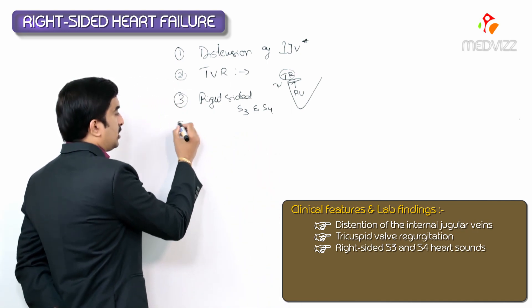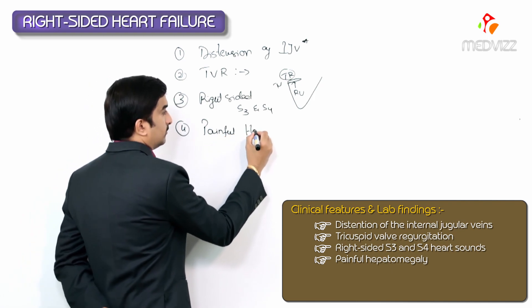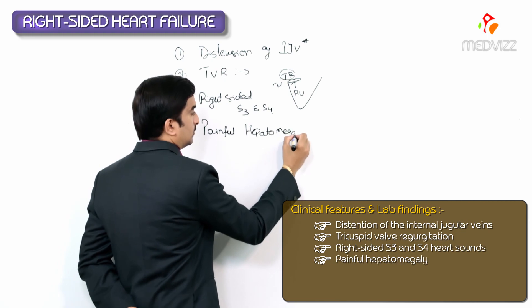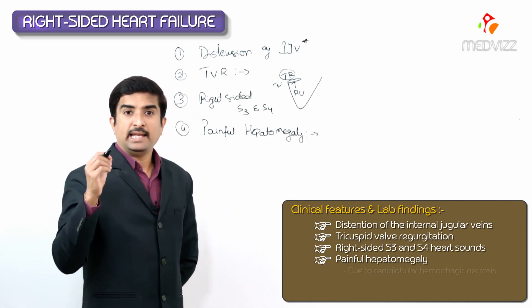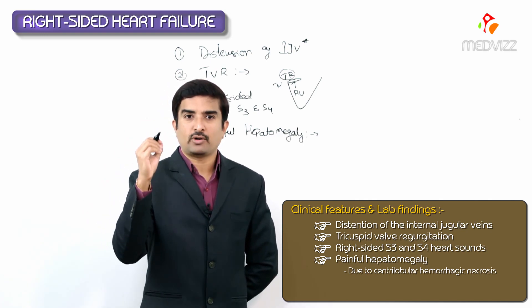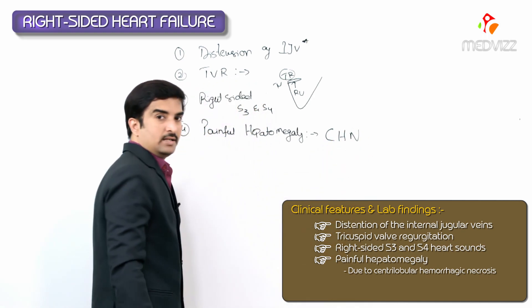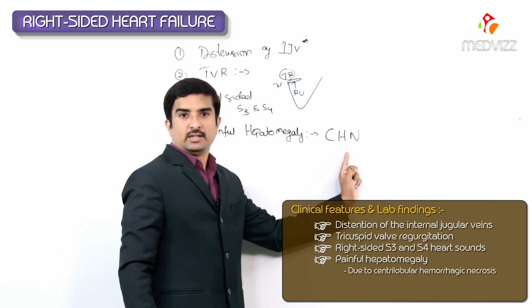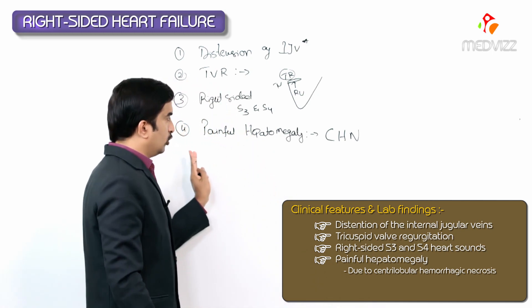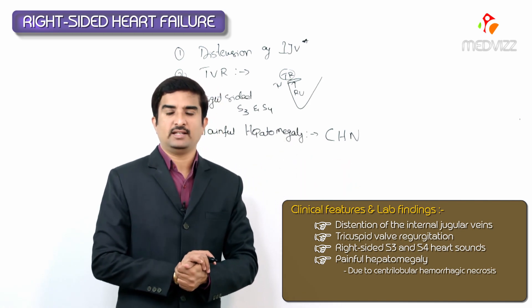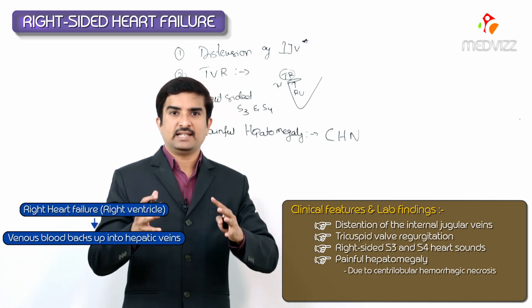An important feature is painful hepatomegaly. This is mainly due to centrilobular hemorrhagic necrosis. Centrilobular hemorrhagic necrosis is responsible for the development of painful hepatomegaly. We need to understand why centrilobular hemorrhagic necrosis and painful hepatomegaly are seen in right ventricular failure.